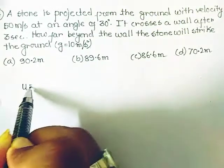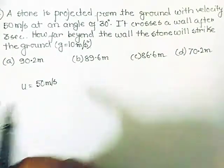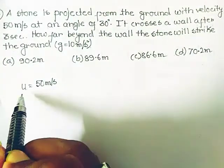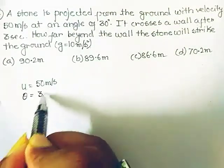So we know the velocity u is 50 meters per second. The angle of projection or throwing is 30 degrees.